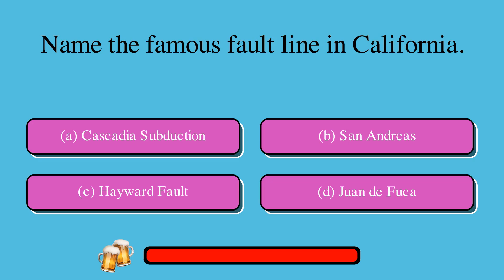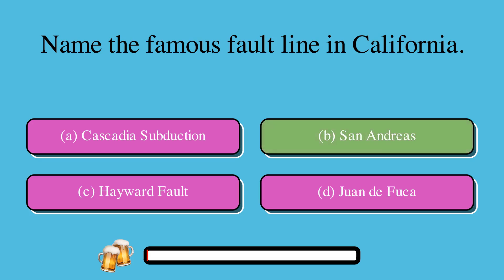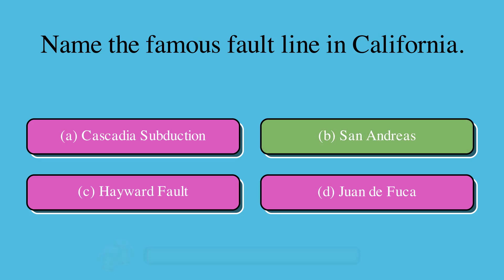Name the famous fault line in California. A. Cascadia Subduction, or B. San Andreas, or C. Hayward fault, or D. Juan de Fuca? The correct answer is B. San Andreas.